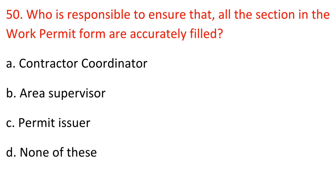Question 50: Who is responsible for ensuring that all sections in the work permit form are accurately filled? A. Contractor coordinator. B. Area supervisor. C. Permit issuer. D. None of these. Answer: C. Permit issuer.